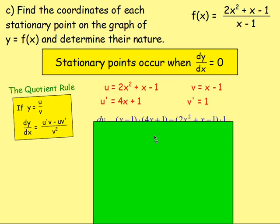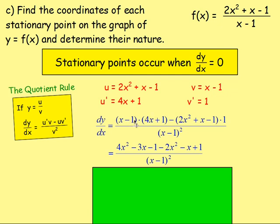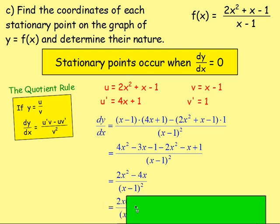Applying the quotient rule: dy/dx = [(x − 1)(4x + 1) − (2x² + x − 1)(1)] / (x − 1)². Expanding the brackets in the numerator and collecting like terms, then taking out a common factor of 2x gives dy/dx = 2x(x − 2) / (x − 1)².